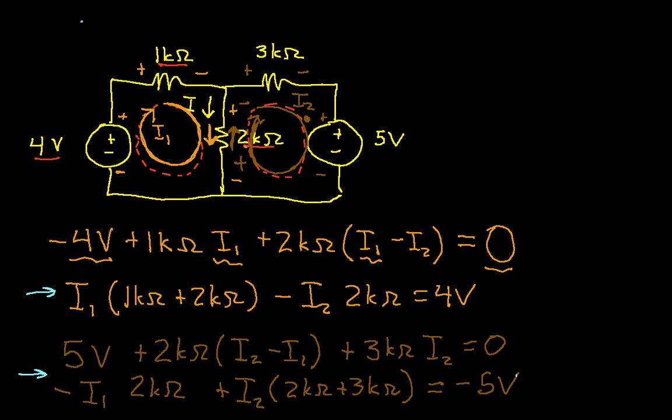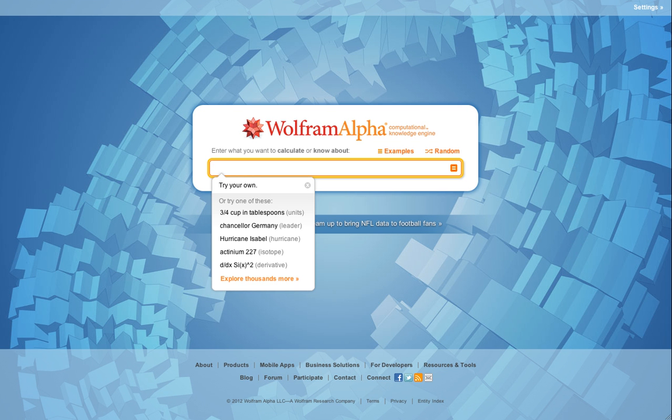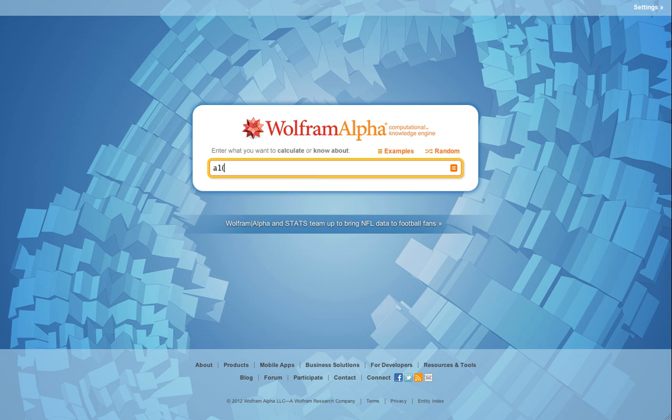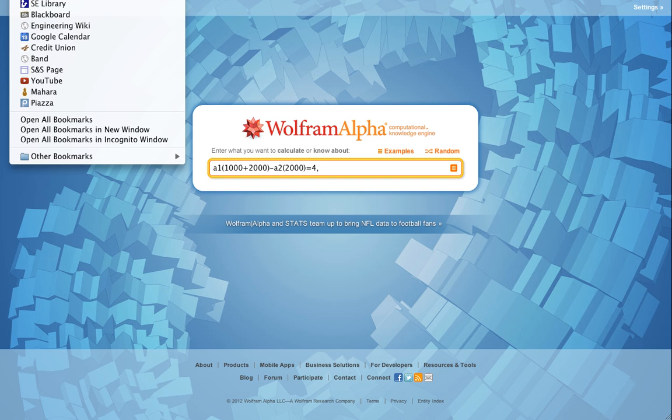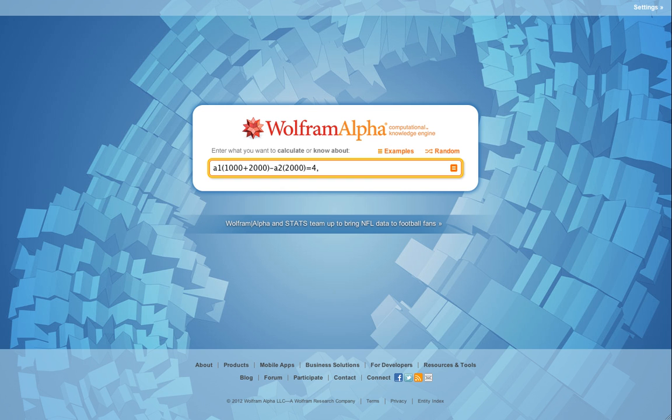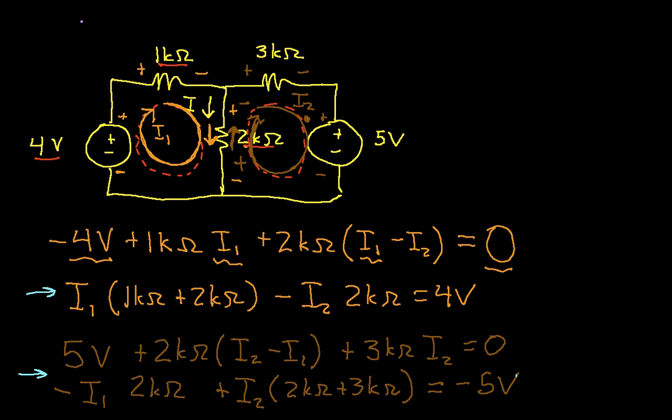So the first equation will be I1 times 1k ohm plus 2k ohms minus I2 times 2k ohms. And I think I'm going to change this from I1 to just A1, because alpha tends to think of I as the square root of negative 1. So we have A1, which stands for I1, times 1k ohms plus 2k ohms minus A2 times 2k ohms. And this is equal to 4 volts, if I've done that correctly. Now I'll just flail around a bit trying to find our... Now it looks like I did it correctly. Now we'll do the second equation.